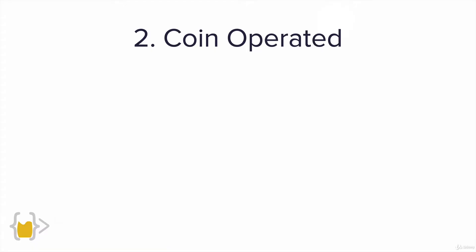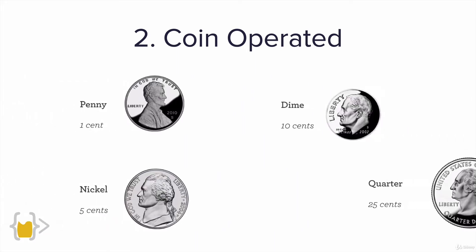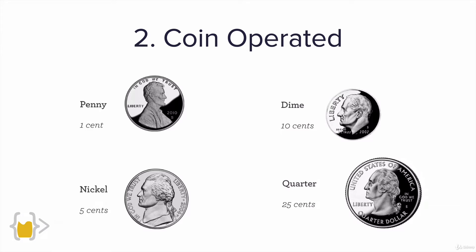The second feature of our coffee machine is that it's coin operated. We're going to be using American coins, and there are four types: the penny, the nickel, the dime, and the quarter. They used to also have the dollar coin but stopped minting it a few years ago, so we're not counting it. The penny is worth one cent, the nickel five cents, the dime ten cents, and the quarter is a quarter of a dollar. These values in decimal would look something like this.